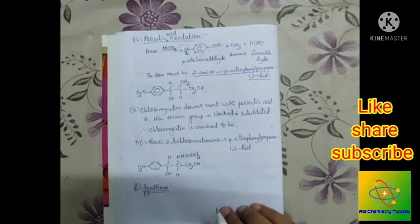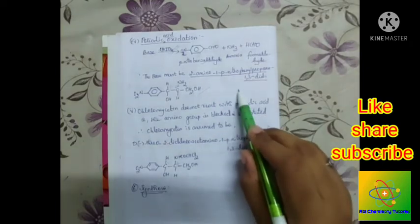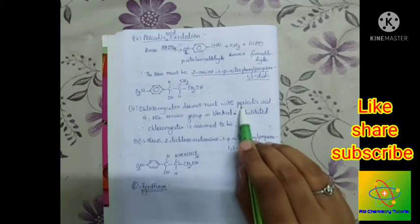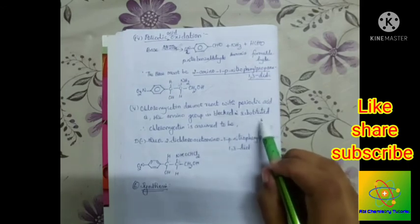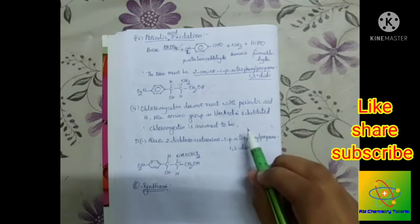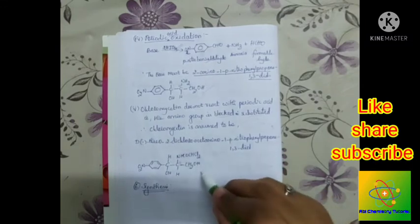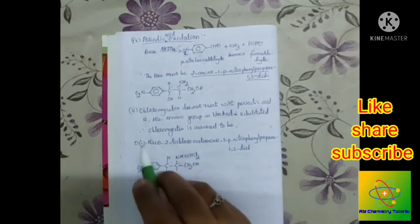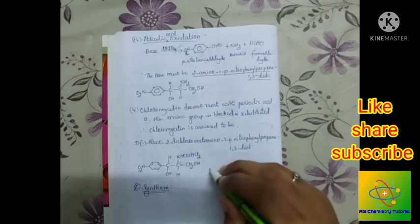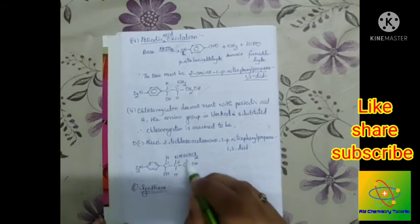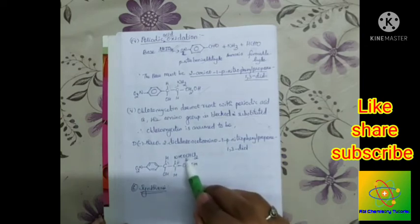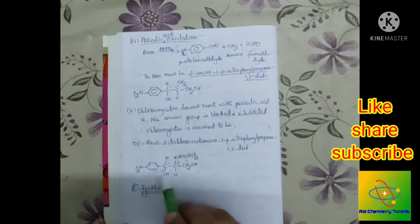Importantly, chloromycetin does not react with periodic acid while the base does — this means the amino group in the base is blocked or substituted in chloromycetin. Using all these considerations, we conclude the structure of chloromycetin. The IUPAC name is D-minus threo-2-(dichloroacetamido)-1-(para-nitrophenyl)propane-1,3-diol, which is optically active.